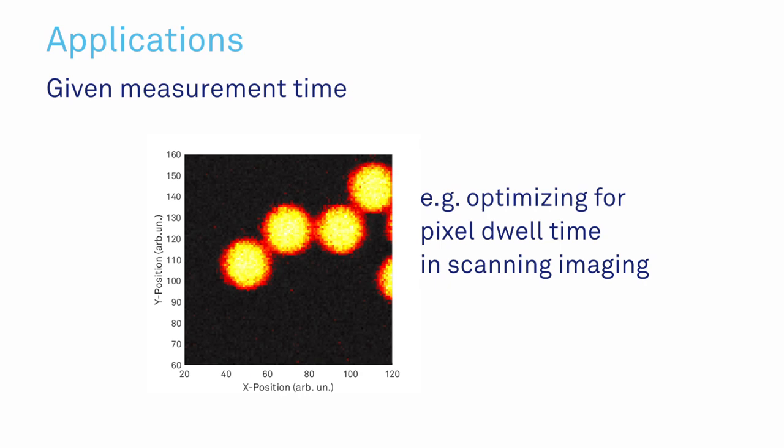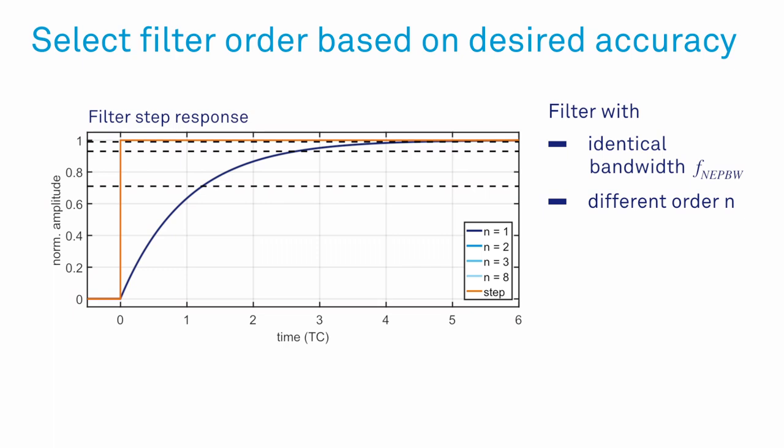Let's have a look at the two most common measurement situations to see how to correctly choose those two parameters. First we consider applications where the critical constraint is the measurement time, for instance in scanning imaging.